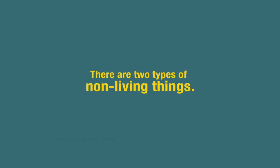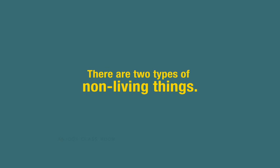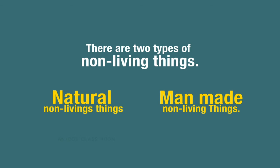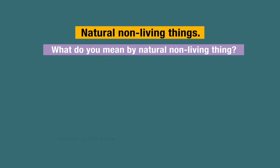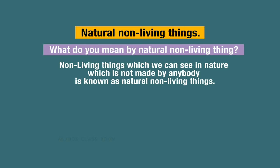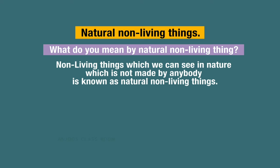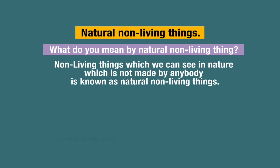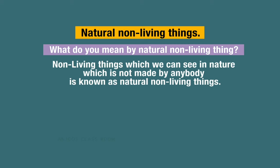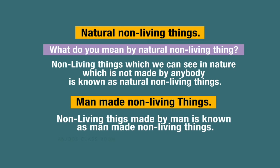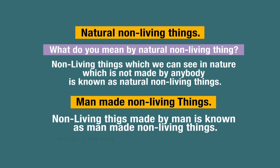Non-living things are of two types: natural non-living things and man-made non-living things. Natural non-living things are things you can see in nature that are not made by anybody — they are naturally there. Man-made non-living things are things made by people.